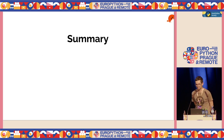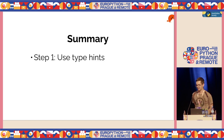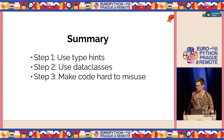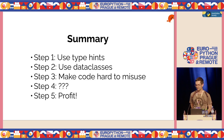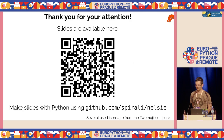To sum up: to write Python code like Rust, you should use type hints, you should use data classes, you should make it hard to misuse code, and then you can perhaps profit. Thank you for your attention.